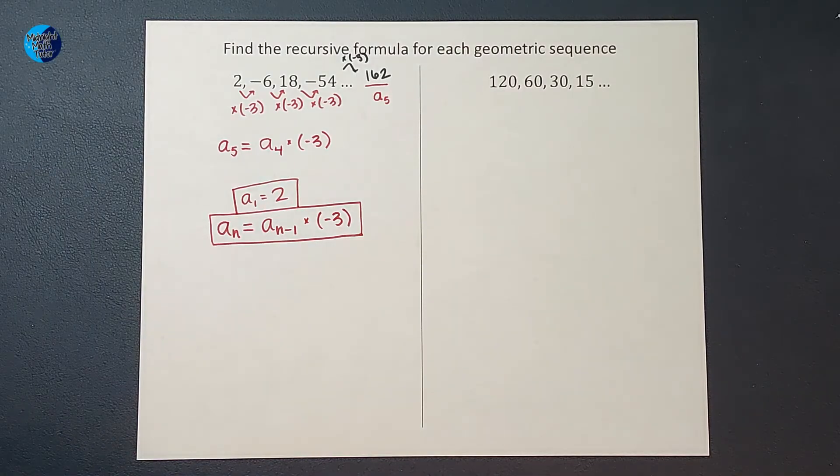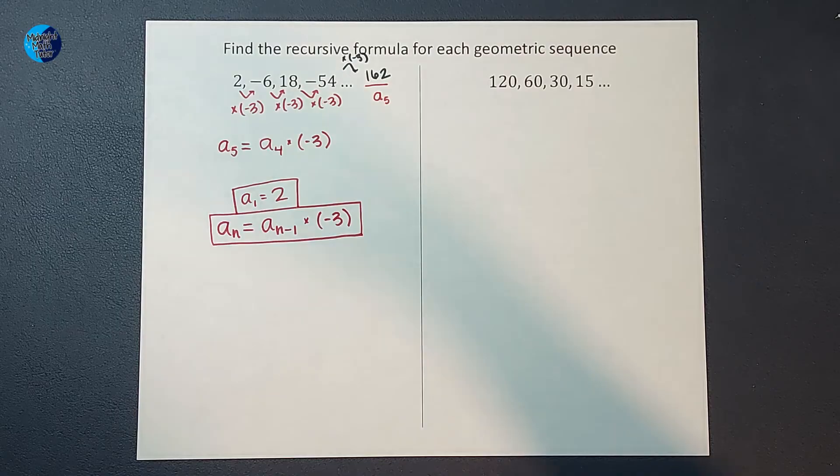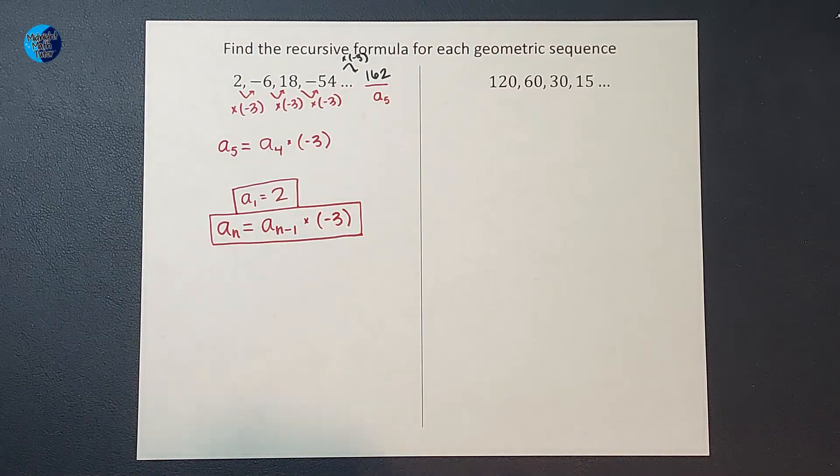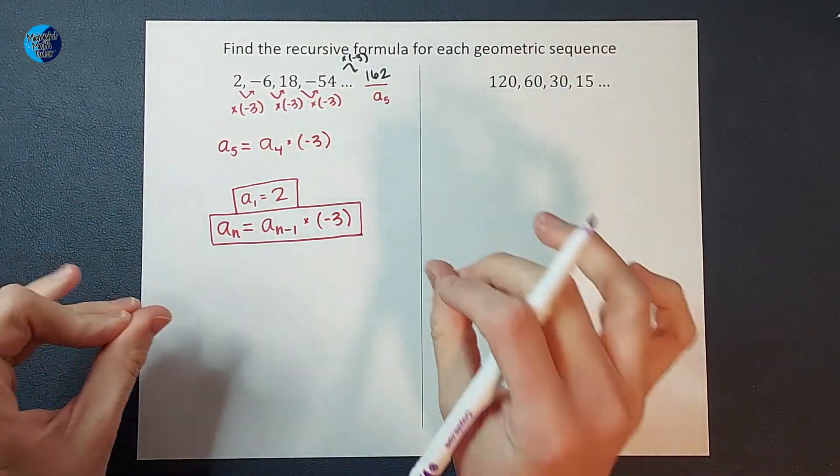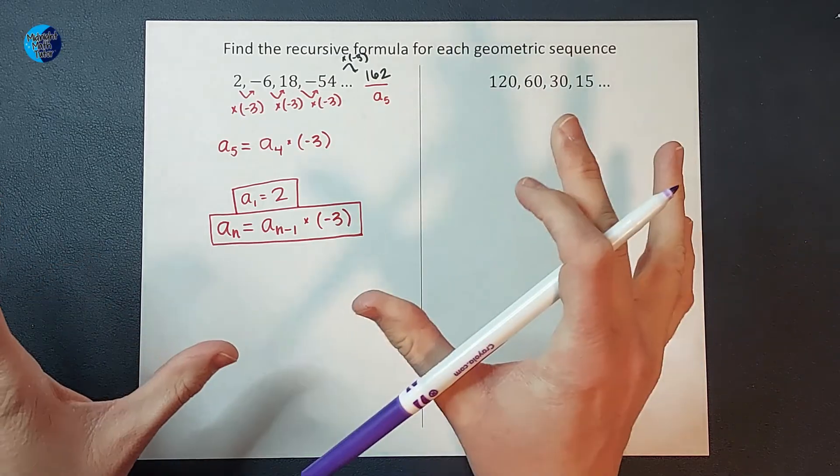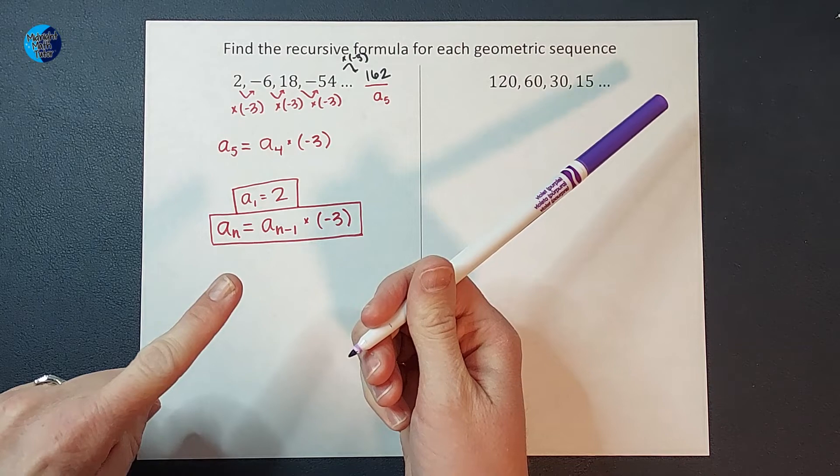Okay, so the thing about recursive formulas is you have to know the term before, right? If I want to know the 100th term, I have to know the 99th, which is helpful but can get annoying. So if you want to learn the explicit formulas, and that way you can just plug in whatever you want and you don't have to know the one before, I'll link that in the corner for you.